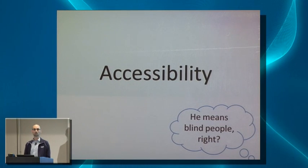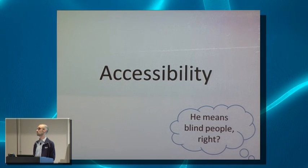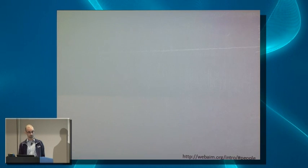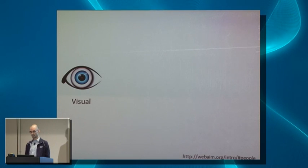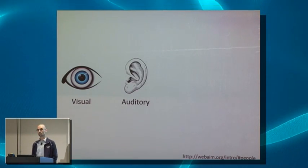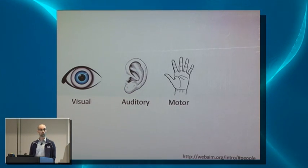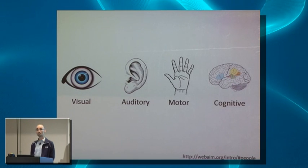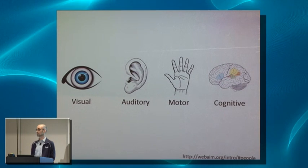It's unfortunate that people think about accessibility that way, because we're missing out on a lot of power we can give to people. There are actually several different categories of issues that affect how people use computers: visual issues, auditory issues — which are becoming more important as online video grows — motor issues, and cognitive issues.